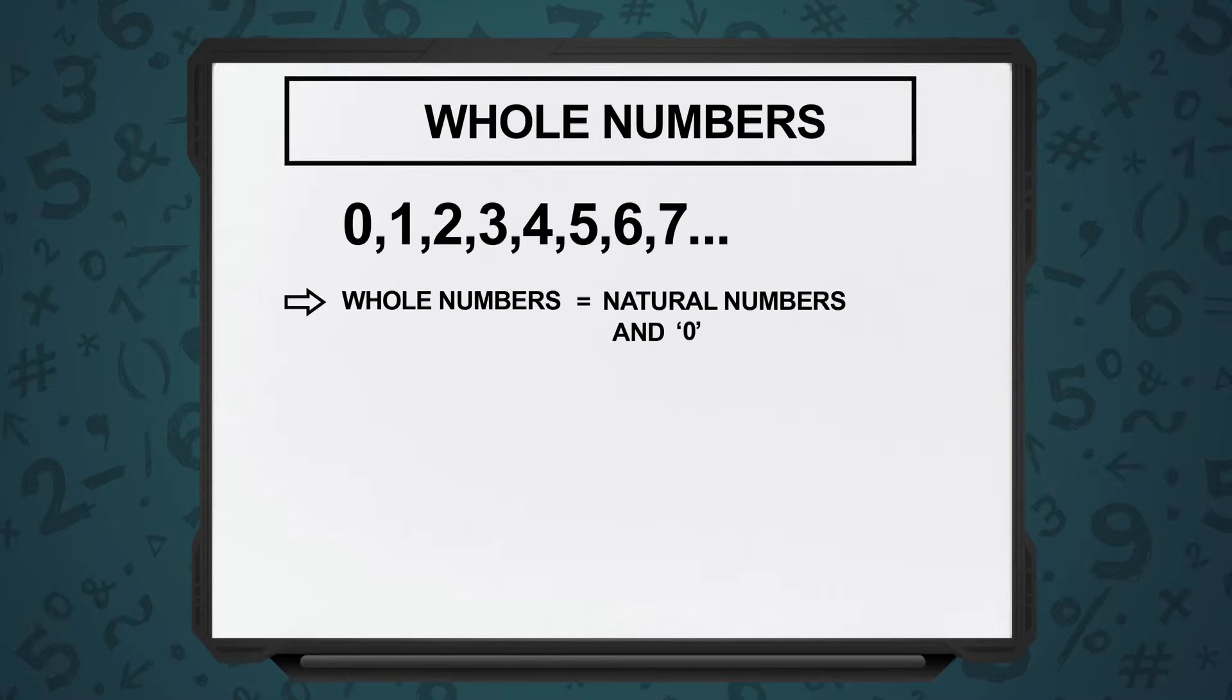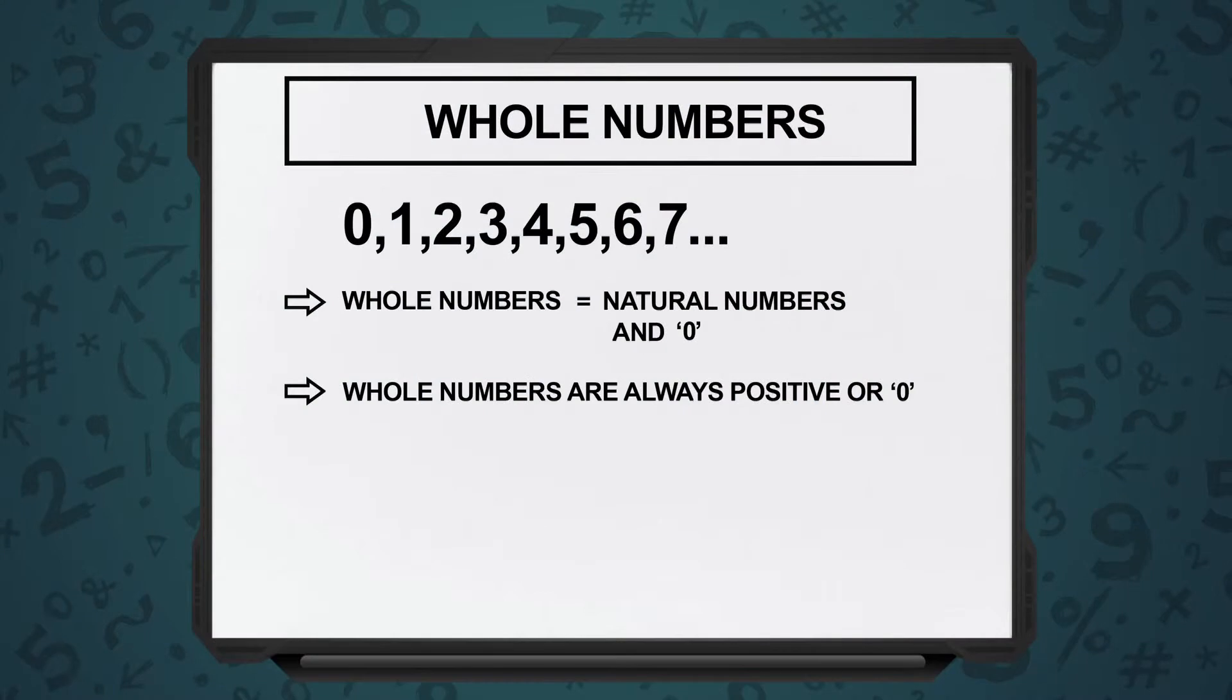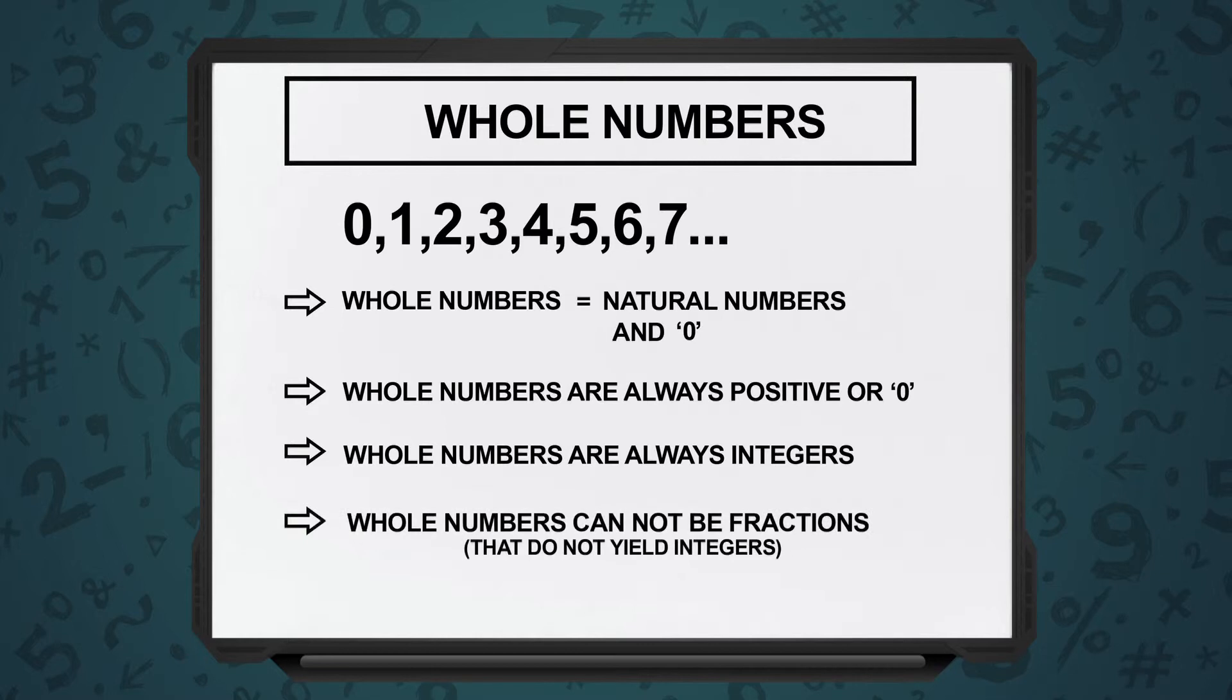Zero is not a natural number because in natural numbers we take counting numbers, but zero is a whole number. So whole numbers have zero, all your counting numbers are there, negative numbers are not there, fractions are not there. So we saw natural numbers, we saw whole numbers.